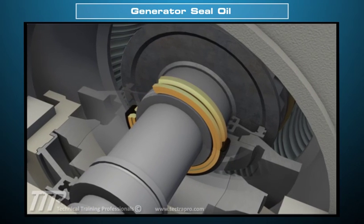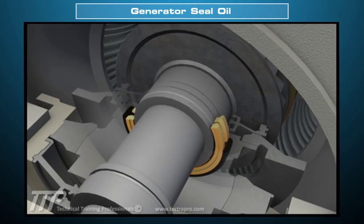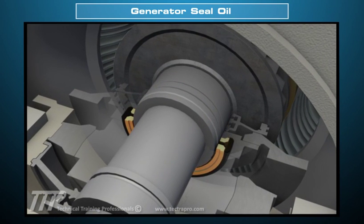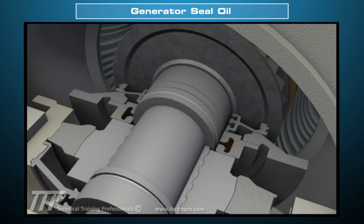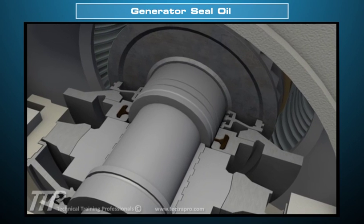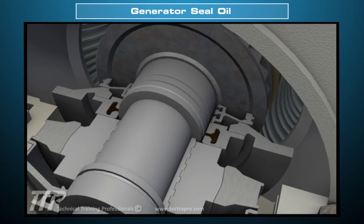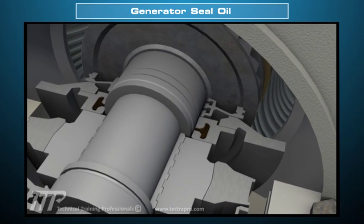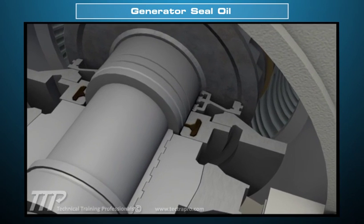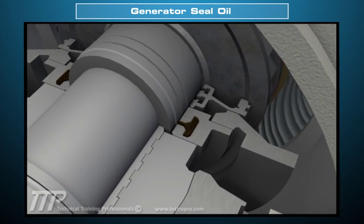The generator seal oil system course provides an overview of the operation. System flows and components are shown, to include oil flows from supplies to the seals.